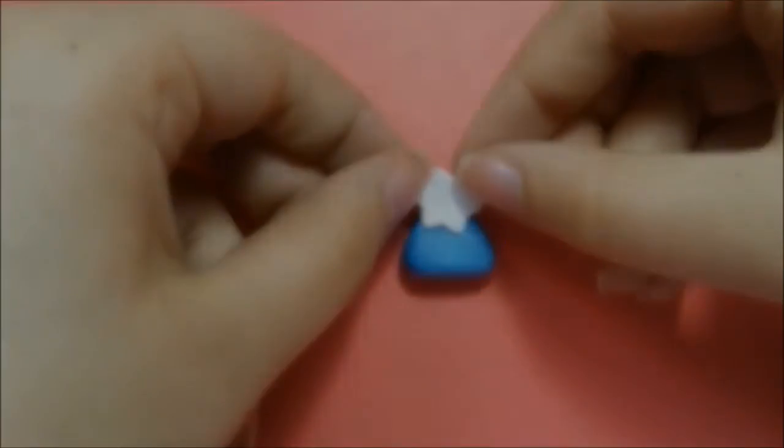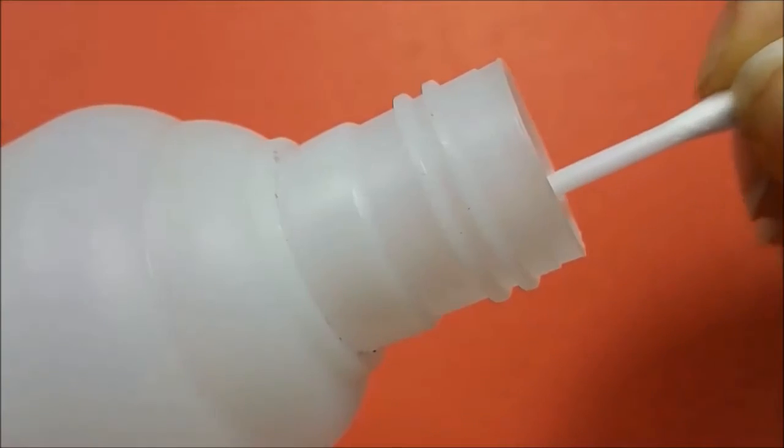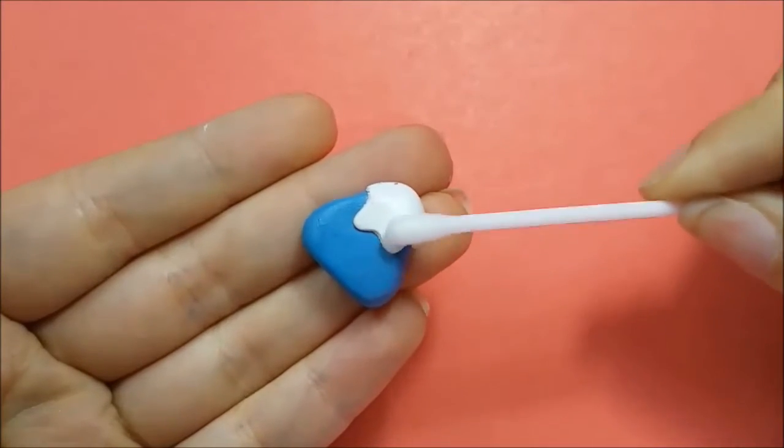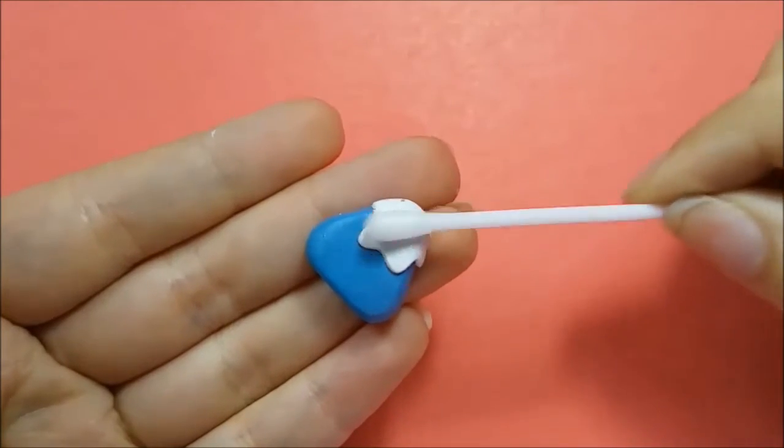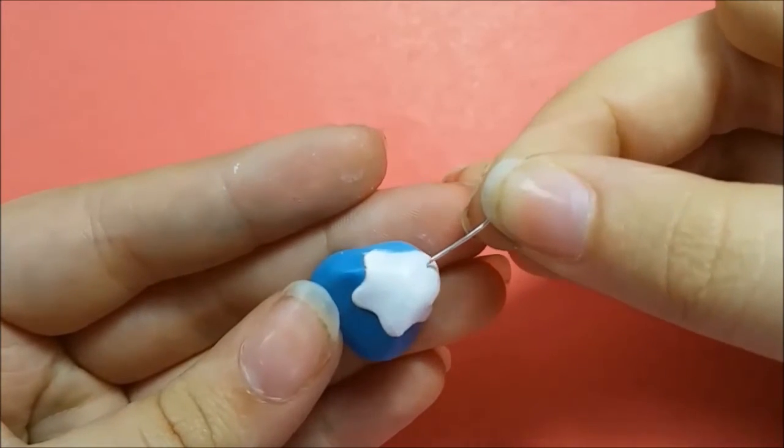Add this to the top of your triangular shape to form the snow on the mountain. Dip your q-tip in nail varnish remover to clean up the piece. Add the eye pin if you wish to make this into a charm.